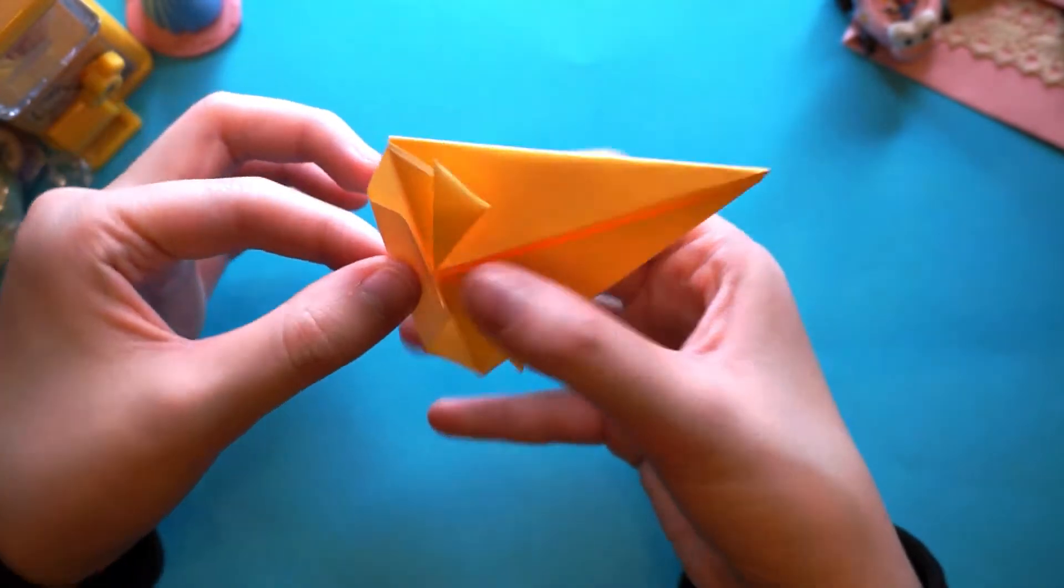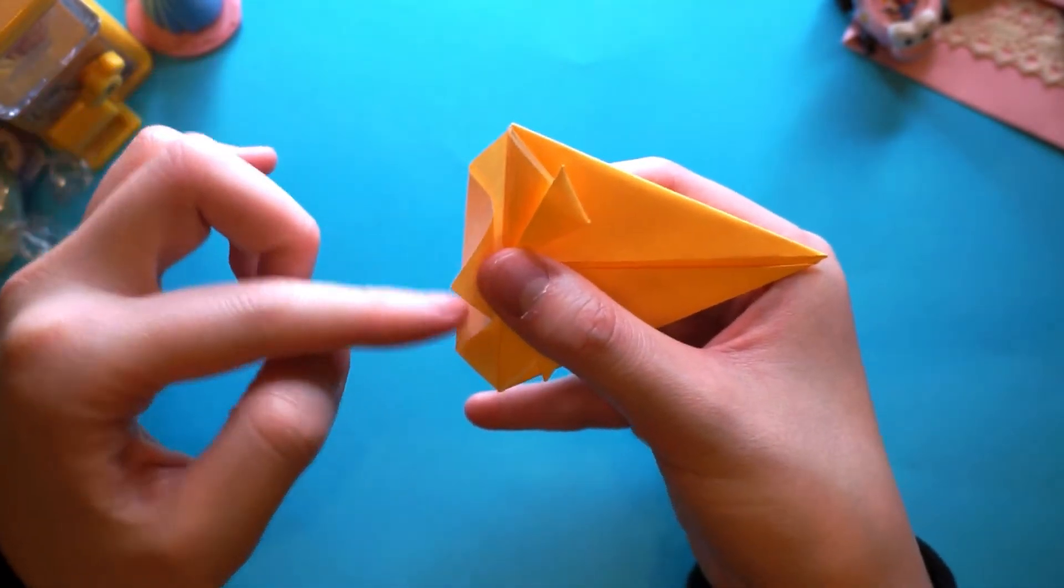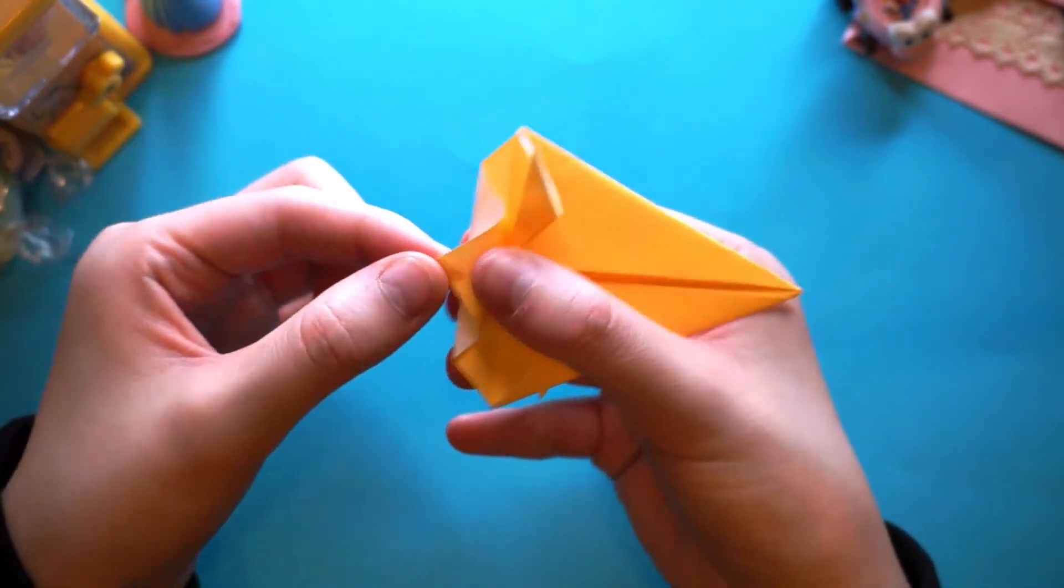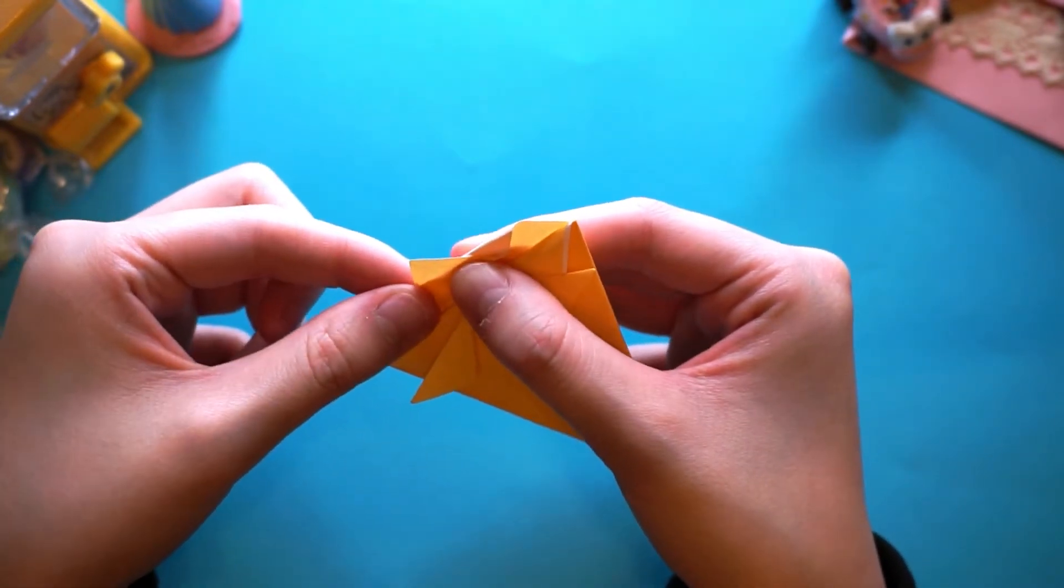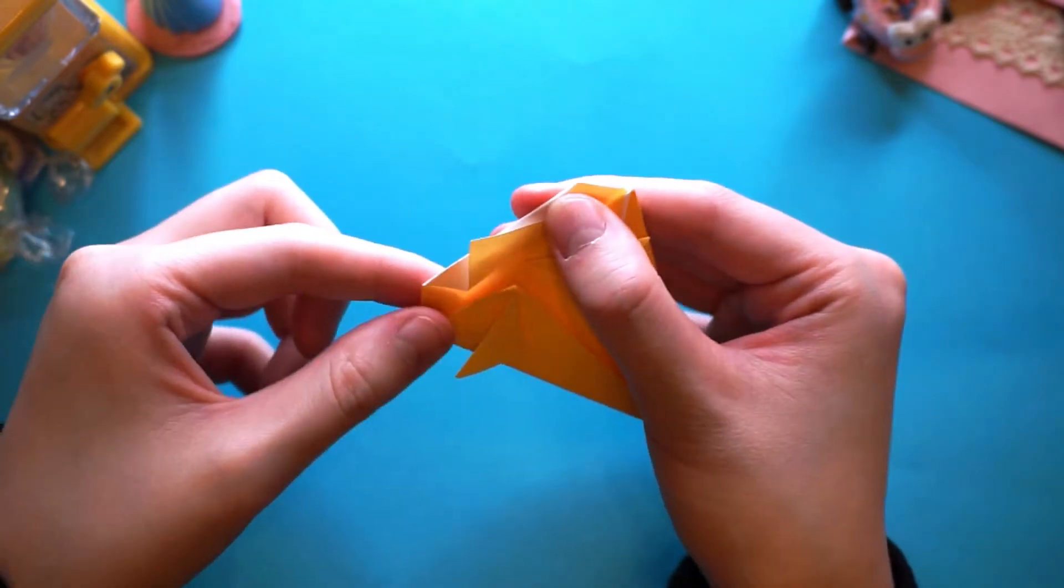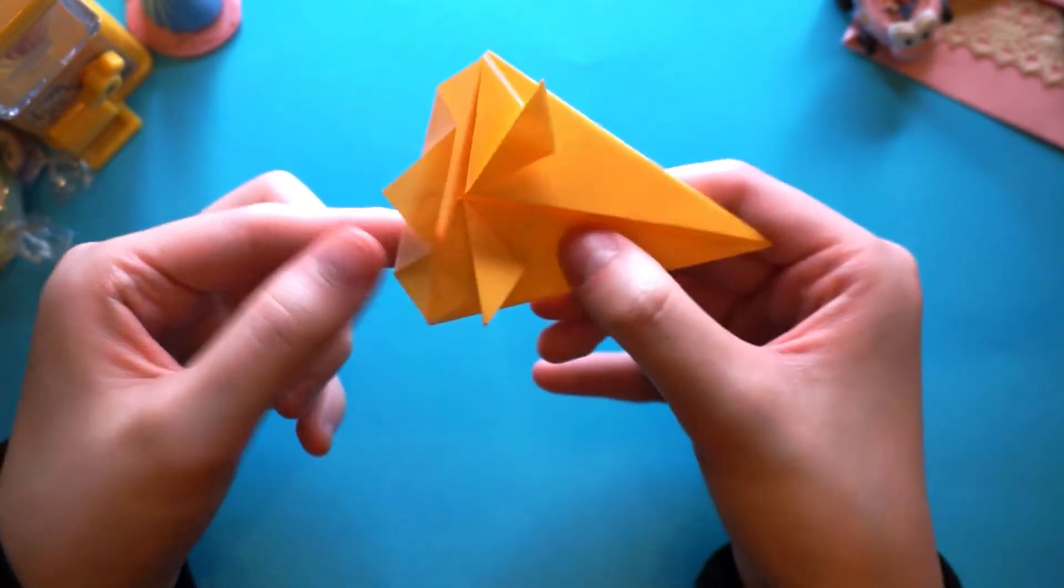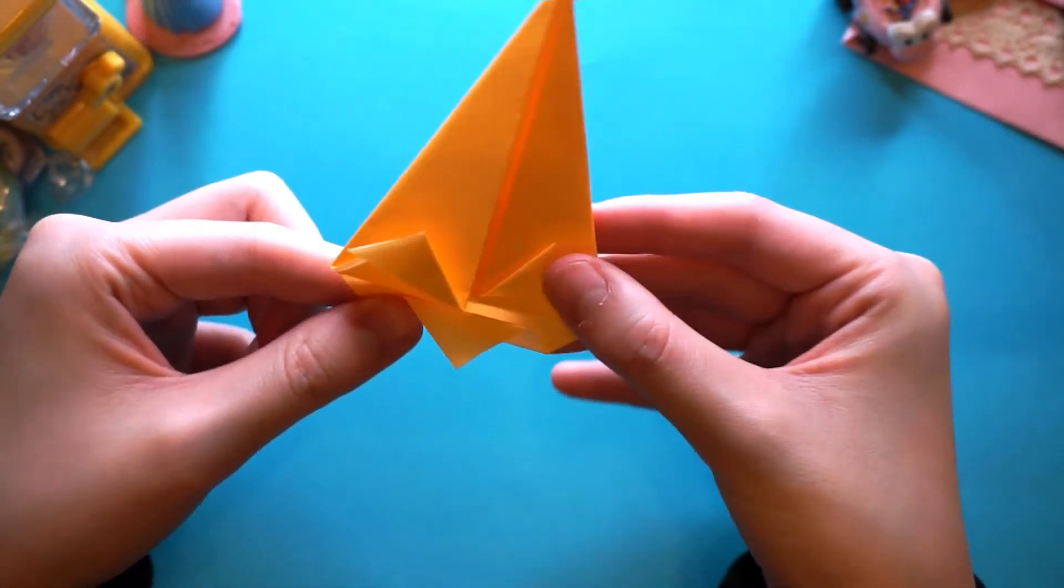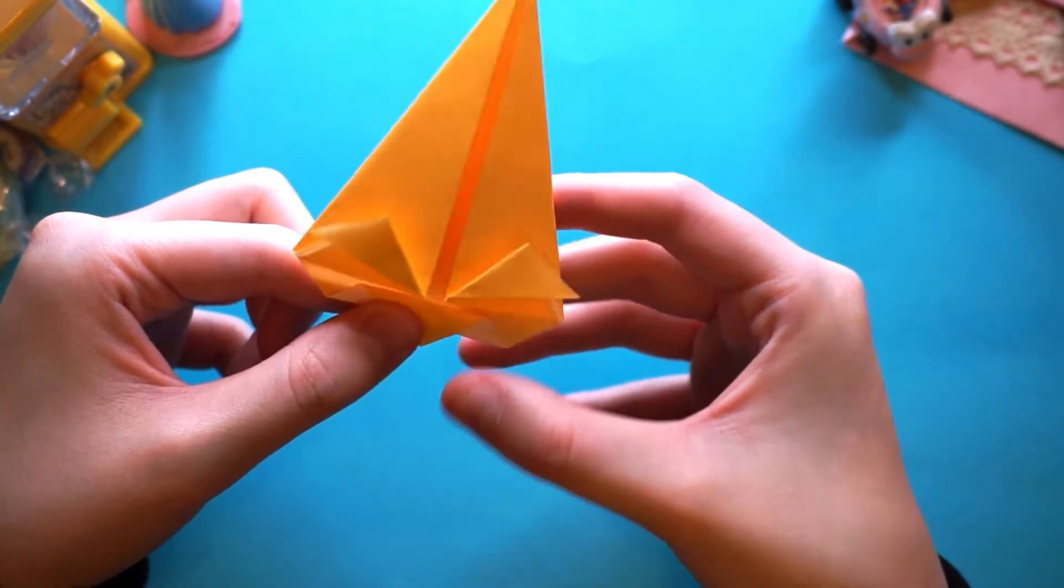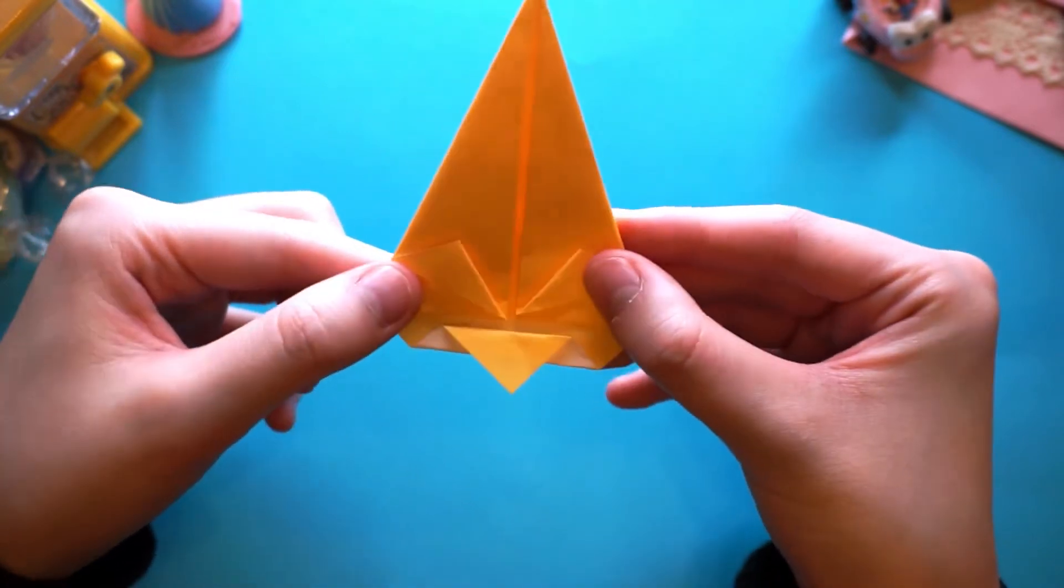And then we're going to fold this part down so it's over the edge of what we've just folded. I'm trying to get it as straight as possible. With this origami, there's not a lot of creases that we're making so a lot of it is kind of guesswork which is really testing you.